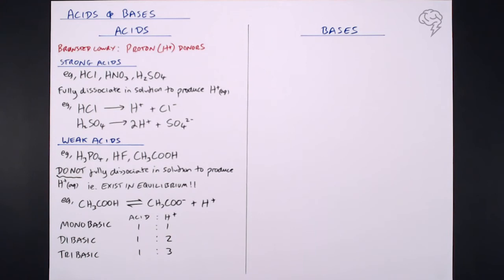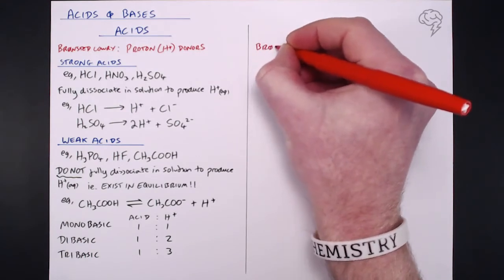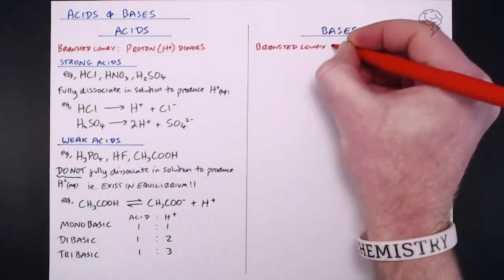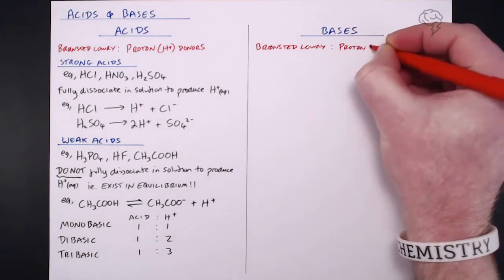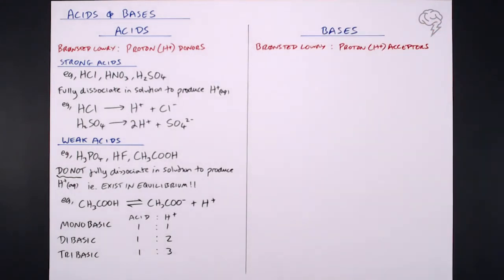Now what we need to do is look at the flip side of things and check out bases. According to Bronsted-Lowry, bases are actually proton acceptors. So you get the feeling that acids and bases - it's all about protons, it's all about hydrogen ions. Bases accept hydrogen ions - they basically take them out of solution, they react with hydrogen ions. So that's our definition of a base: proton acceptors.